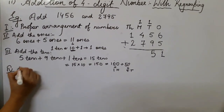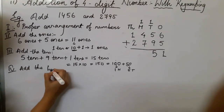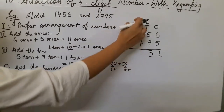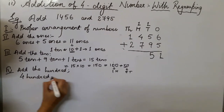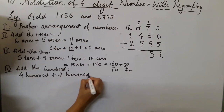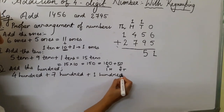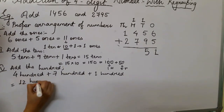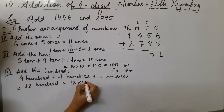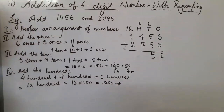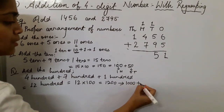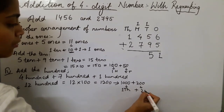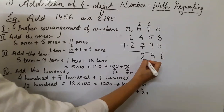Now add the hundreds: four hundred plus seven hundred plus one hundred (carried). Four plus seven is eleven, eleven plus one is twelve hundred. Twelve hundred breaks into one thousand plus two hundred. So in the hundreds place we write 2, and carry one to the thousands place.